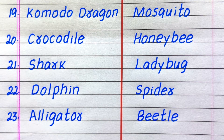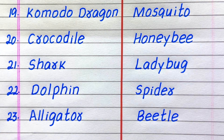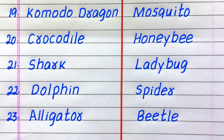19th example of an invertebrate animal is Mosquito, 20th Honeybee, 21st Ladybug, 22nd Spider, 23rd Beetle.